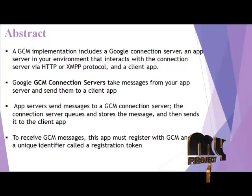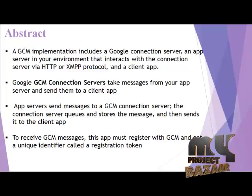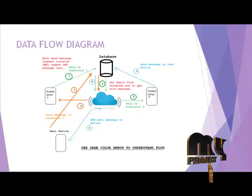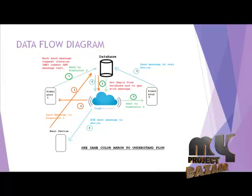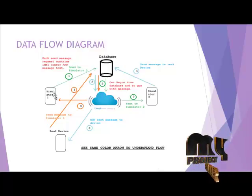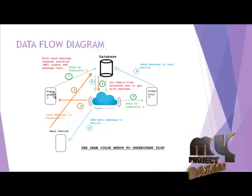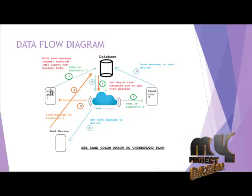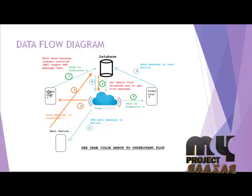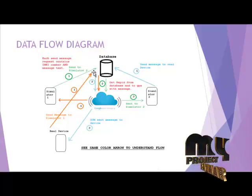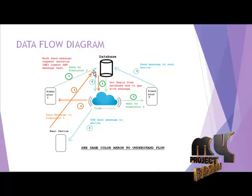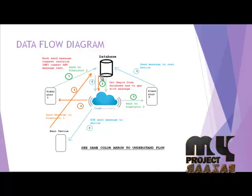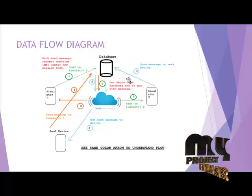Let's see the data flow diagram of our project. First, Simulator 1 — considered as mobile node 1 — has been sent to the database as a request. After that, Simulator 2 has been involved.